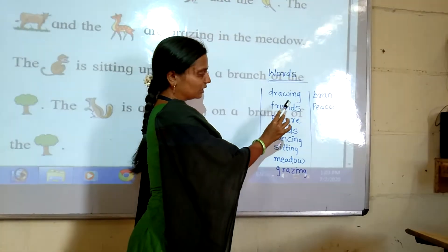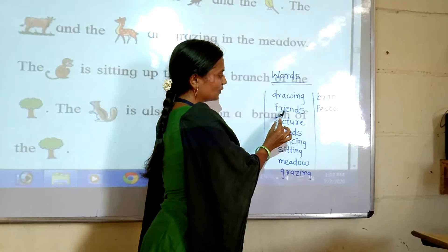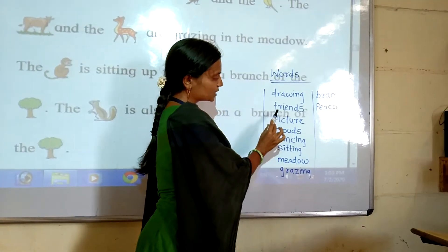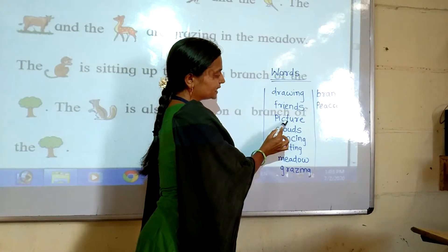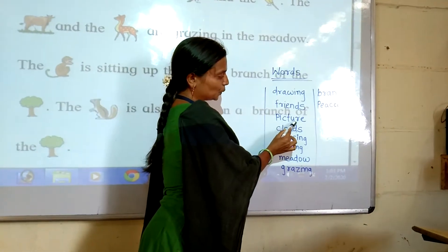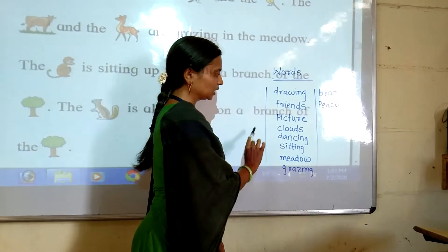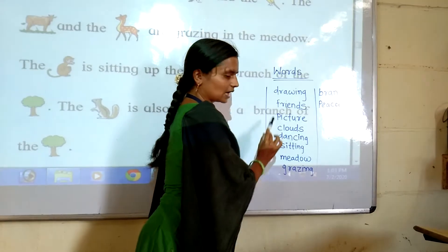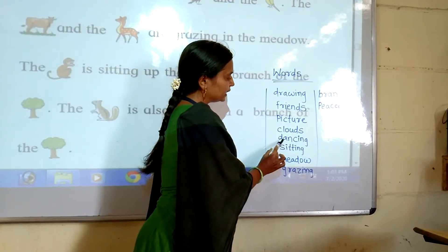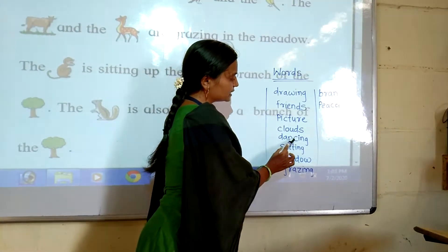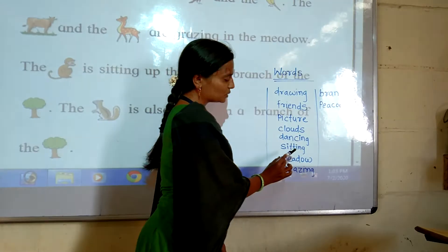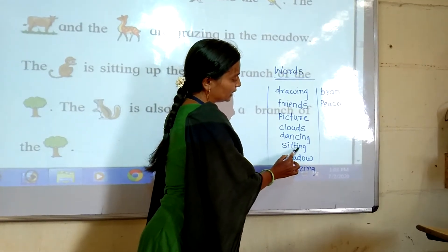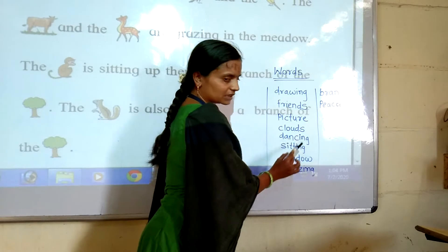Drawing means Chitra Karni. F-R-I-E-N-D-S. Friends means Mitra. P-I-C-T-U-R-E. Picture means Chitra. C-L-O-U-D-S. Clouds means Dago. D-A-N-C-I-N-G. Dancing means Rudya Karni.